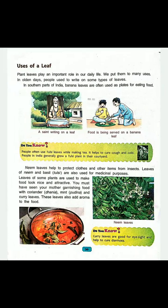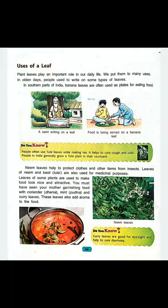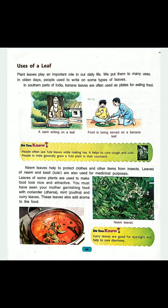Uses of leaves: plant leaves play an important role in our daily life and we put them to use in many ways. In older times, people used to write on some types of leaves. Tulsi leaves are used while making tea — they help to cure cough and cold. People in India generally grow a tulsi plant in their courtyard. Neem leaves also help to protect clothes and other items from insects. Leaves of neem and basil (tulsi) are also used for medicinal purposes.